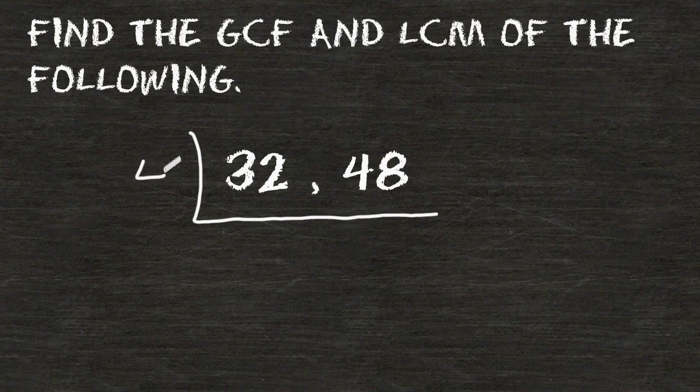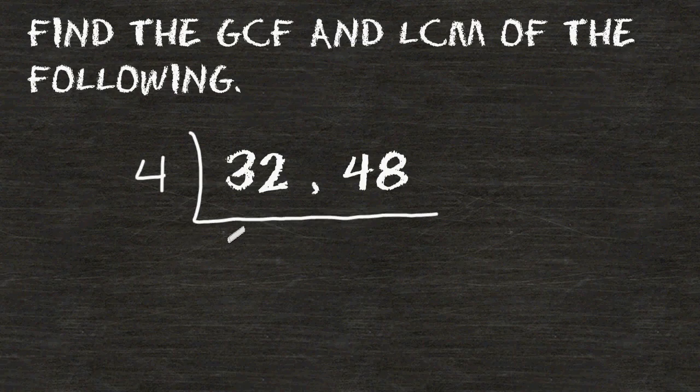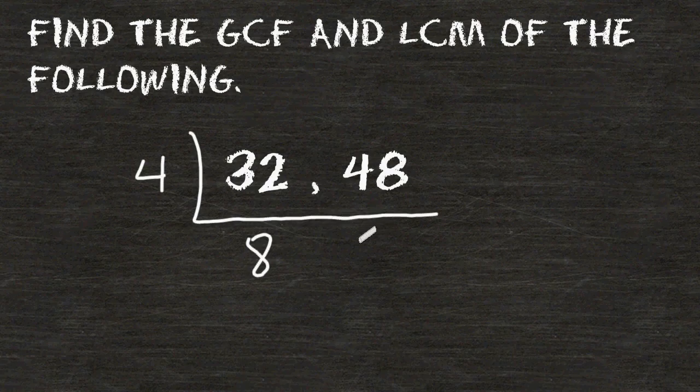For example, the number 4 can equally be divided into 32 and 48, so 4 is a common factor of both 32 and 48. We write how many times that common factor can be divided into each number below each number. So, 4 may be divided into 32 eight times, and 4 can be divided into 48 twelve times.